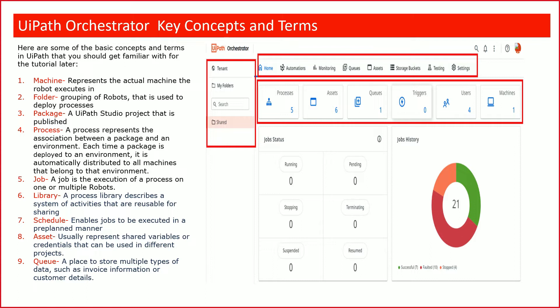Now we have the third concept: Package. In UiPath Studio, we create a workflow and publish it from Studio to the UiPath Orchestrator. Once you publish the project it becomes a package, because UiPath Studio bundles your workflow files with the required runtimes into a zip folder called a .nupkg (NuGet package). So your project is deployed as a package.